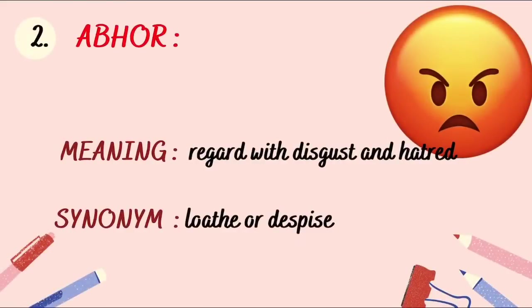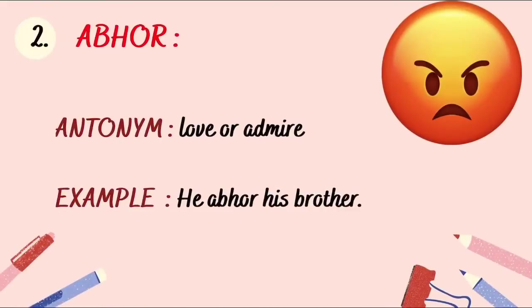The next vocabulary is 'abhor.' Abhor means to regard with disgust and hatred. One uses this word to express a disgusting behavior or hatred towards something or someone — a strong feeling of hatred. The synonym is 'loathe' or 'despise.' The antonym is 'love' or 'admire.'